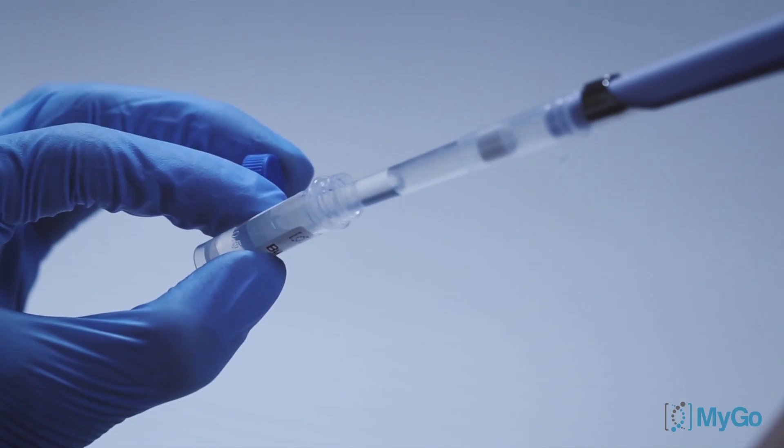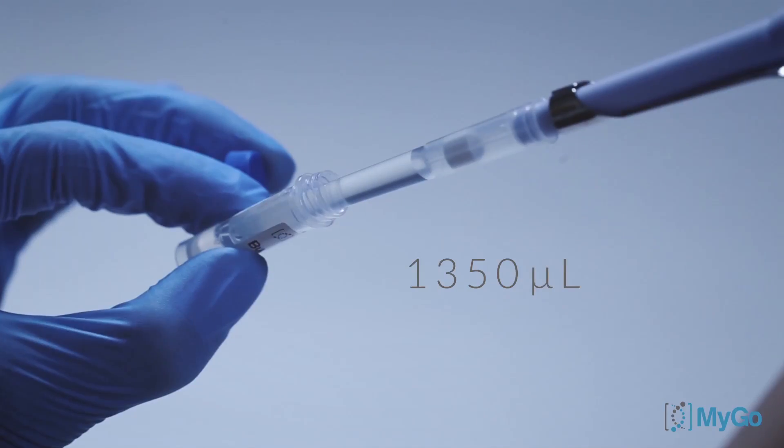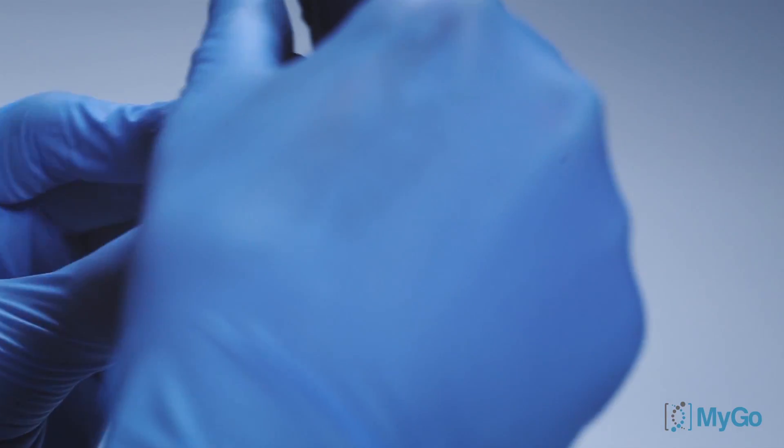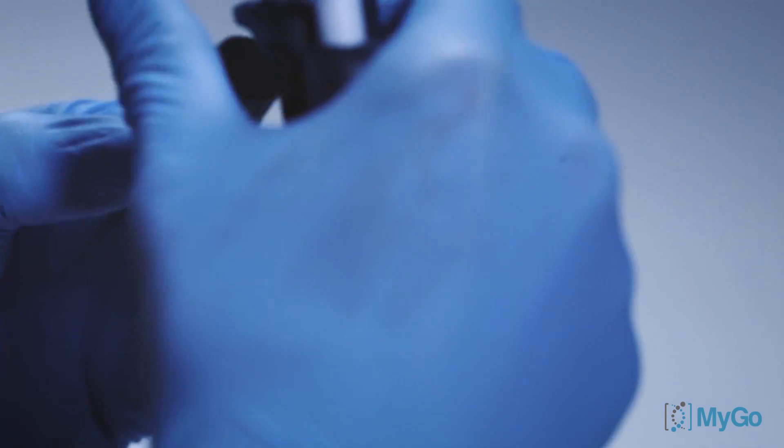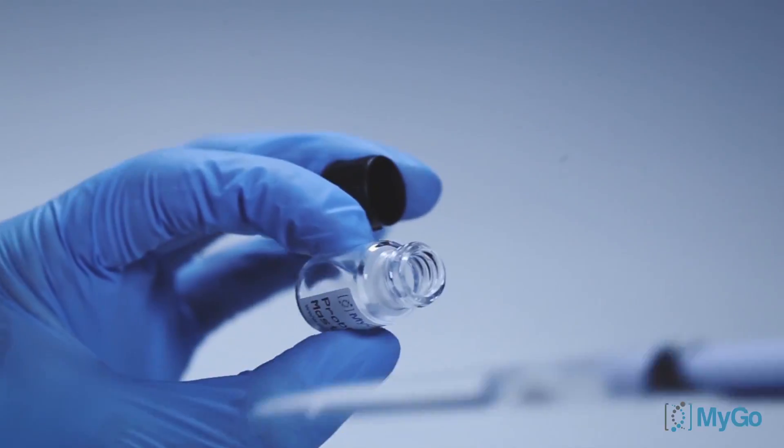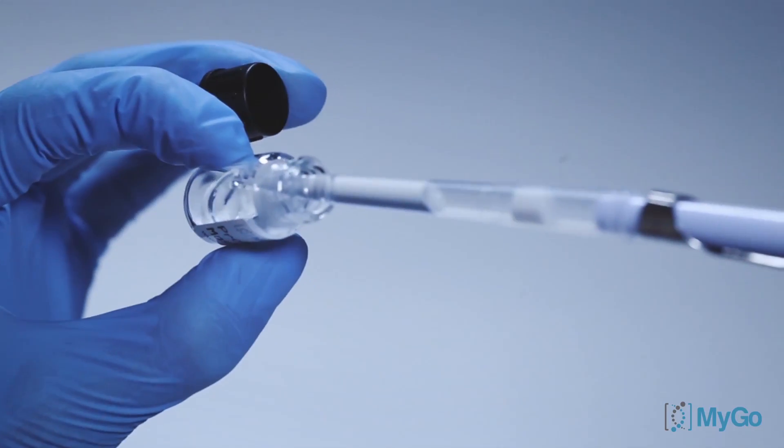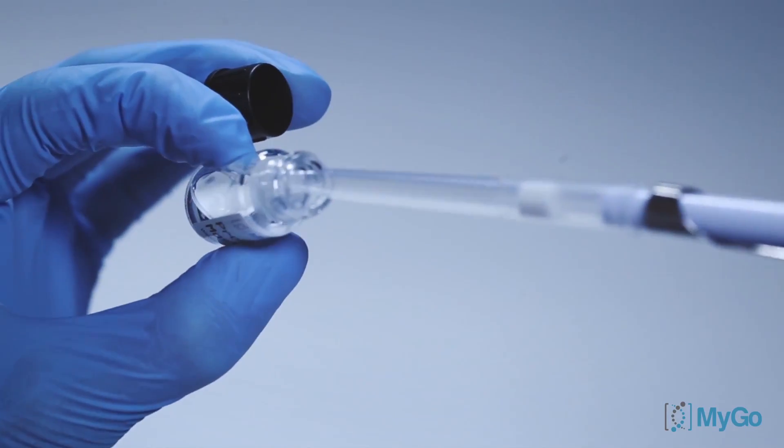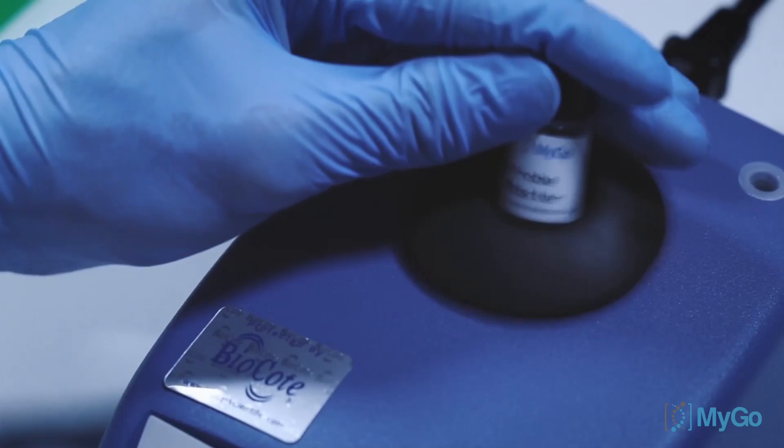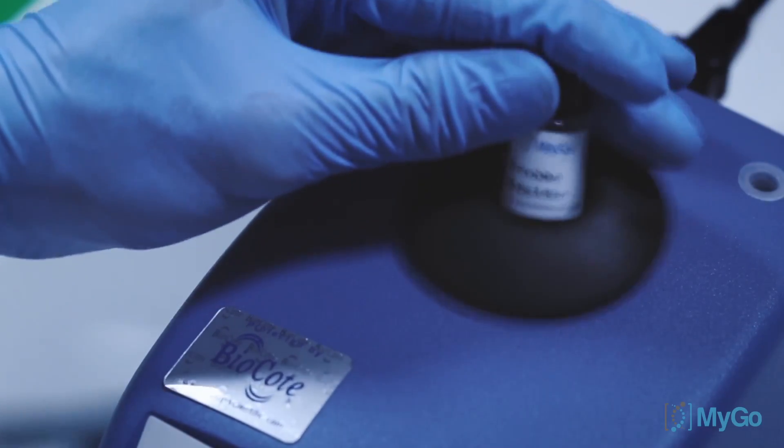First, we need to make up the master mix. Take 1350 microliters or two 675 microliter aliquots of the MYGO buffer and add to the MYGO Probe's master vial. Give the master mix a quick vortex and then leave to settle for one minute.